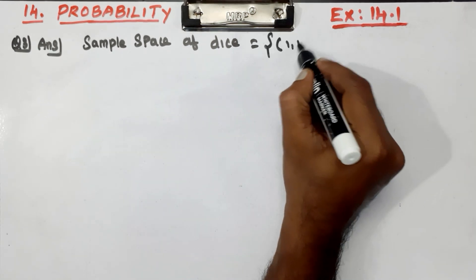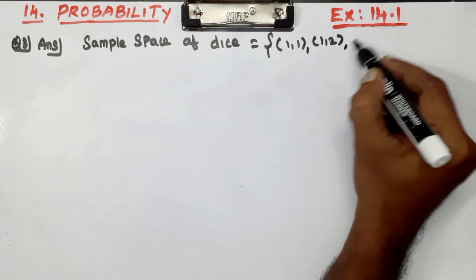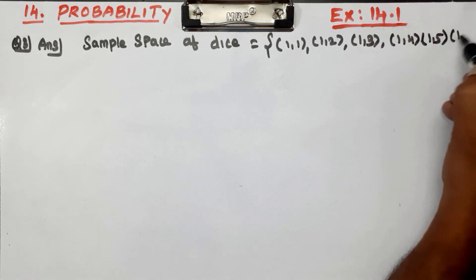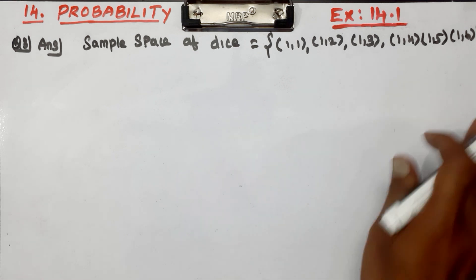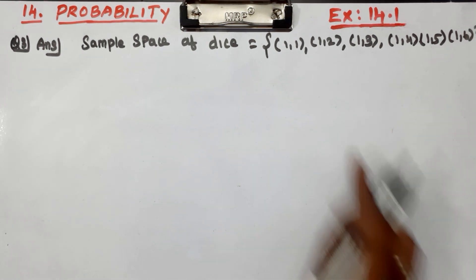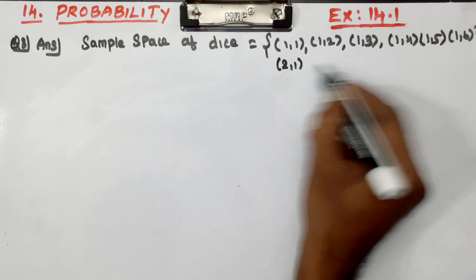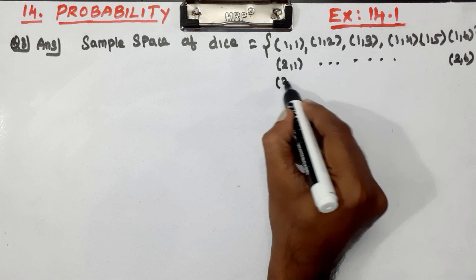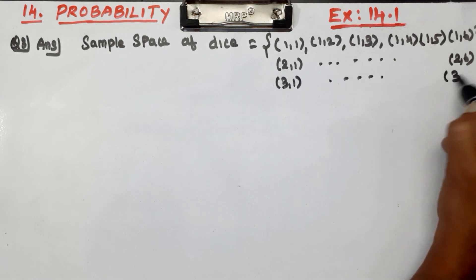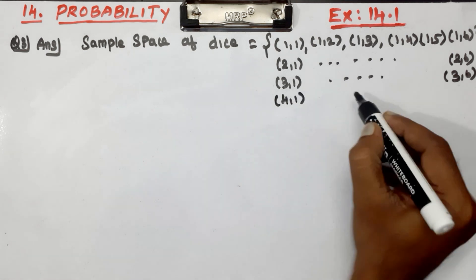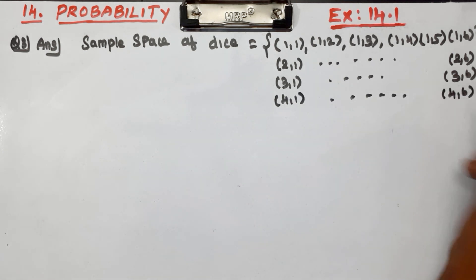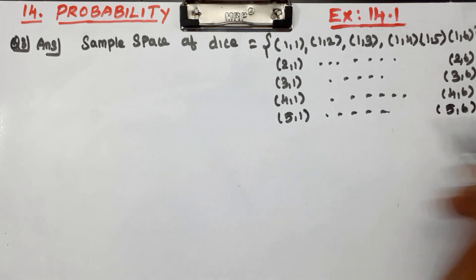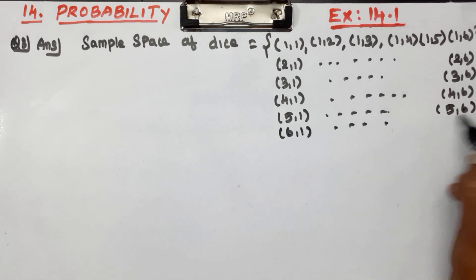Now we're doing two dice. The sample space includes: (1,1), (1,2), (1,3), (1,4), (1,5), (1,6); then (2,6), (3,6), (4,1), (4,6), (5,1), (5,6); and the last one, (6,1) through (6,6).